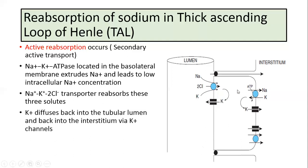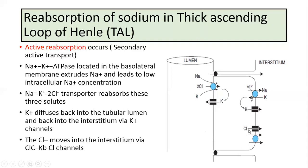The sodium which has entered the cell moves across the basolateral membrane by the action of sodium potassium ATPase. Potassium will also move into the interstitium through the potassium channels. Chloride which has entered the cell moves into the interstitium through the chloride channels which are present on the basolateral membrane.